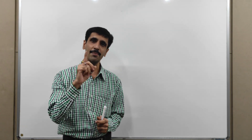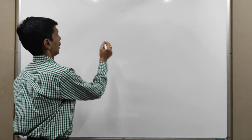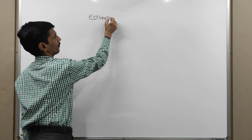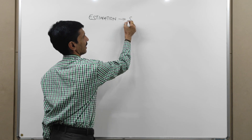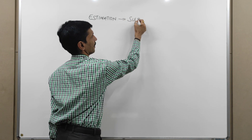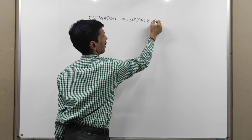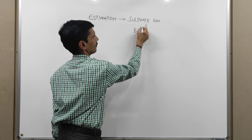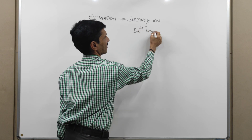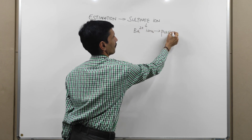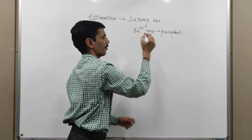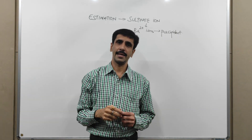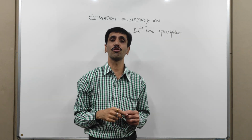We begin with the aim of the experiment. The aim is estimation of sulfate ion using barium ions as precipitant. When you hear the word precipitant, the very first thing which should come to your mind is that the reaction proceeds to precipitation.